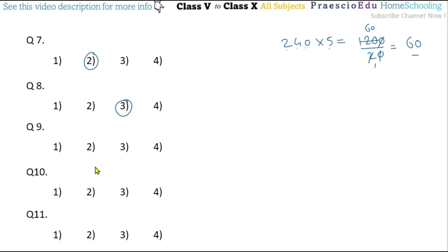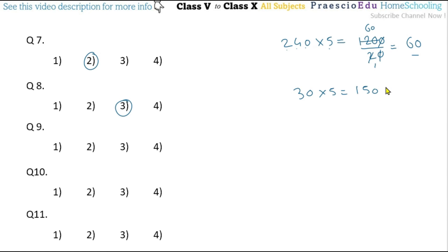Question number nine: How many rupees 10 notes can one get if one gives 30 coins of rupees 5? 30 coins of rupees 5 equals 150 rupees. Dividing by 10, we get 15 notes of rupees 10. This is given in option number three.